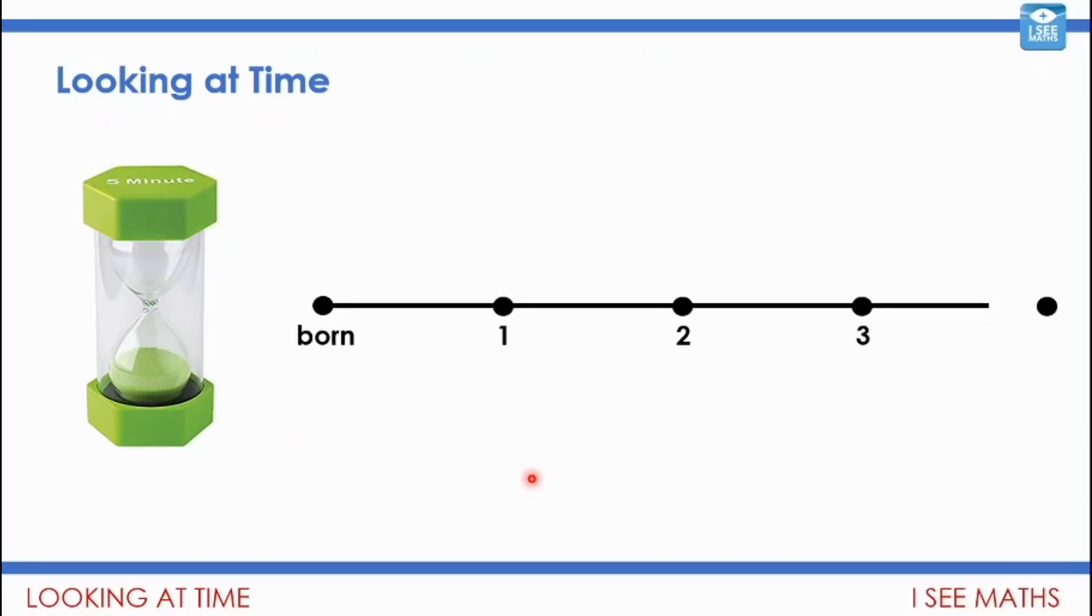I can't represent it by a number of dots because it doesn't really work like that. Imagine a child's age—let's say the child is born, then they had their first birthday, the second, the third, and they're coming up to the fourth.